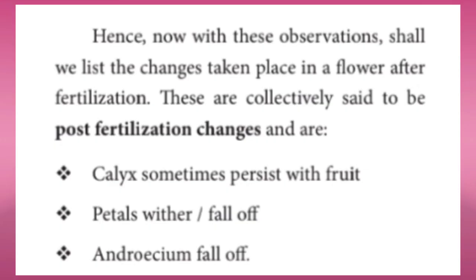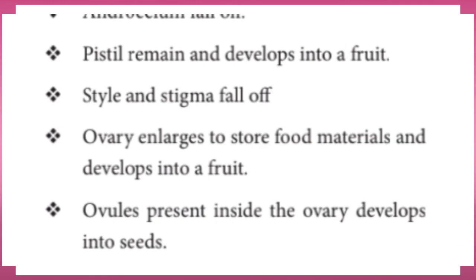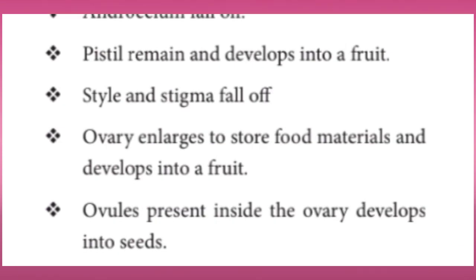Now, with these observations, let us list the changes that take place in a flower after fertilization. These are collectively called post-fertilization changes: sepals sometimes persist with the fruit; petals wither or fall off; androecium falls off; pistil remains and develops into a fruit; style and stigma fall off; ovary enlarges to store food materials and develops into a fruit; ovules present inside the ovary develop into seeds.